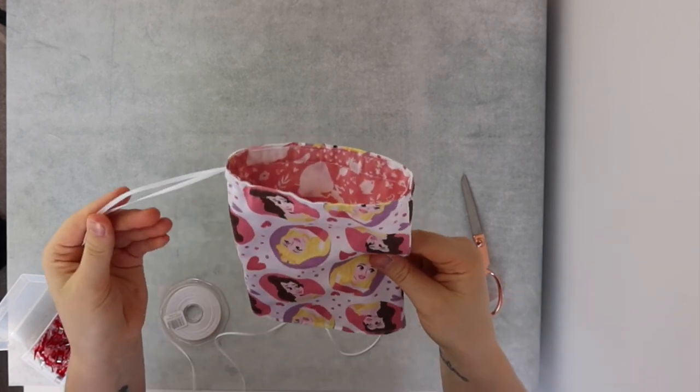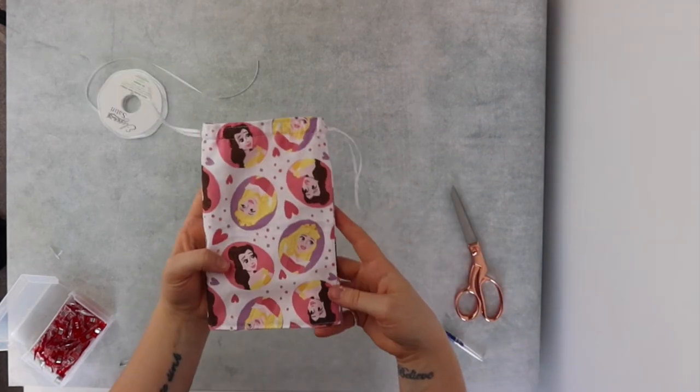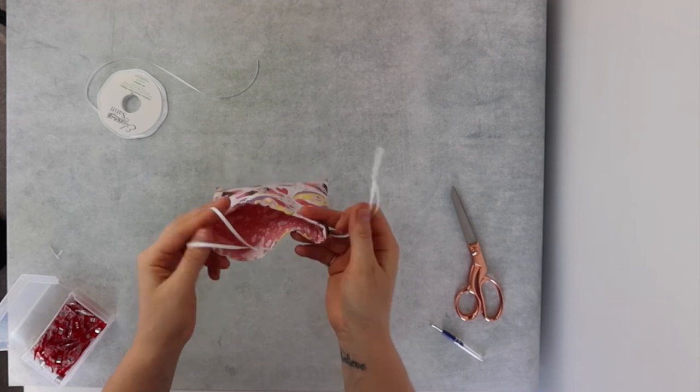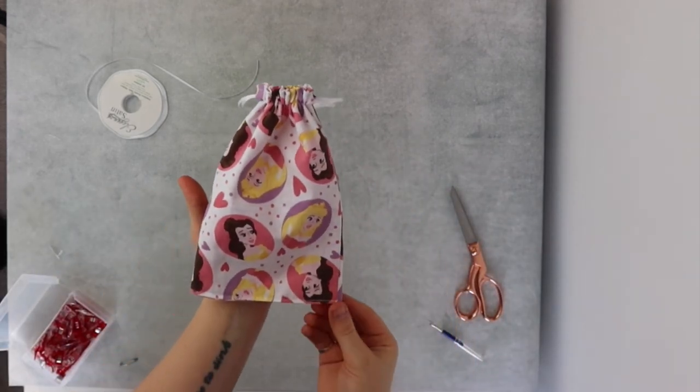So there you have it, your very own drawstring bag with a cute little lining. You simply have to pull it together and use it. Thank you for joining me in this video, I hope you've liked it, I hope it's been helpful and I hope you managed to make some lovely drawstring bags in the future. Thank you for joining me and I'll see you in the next one.